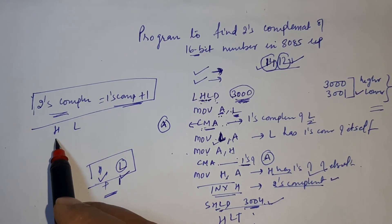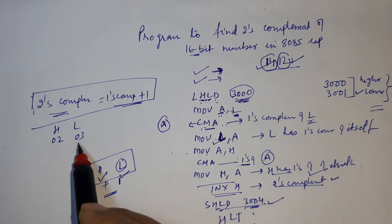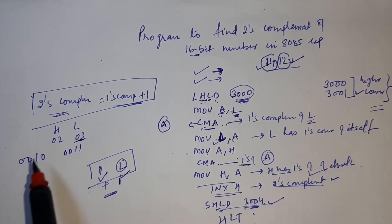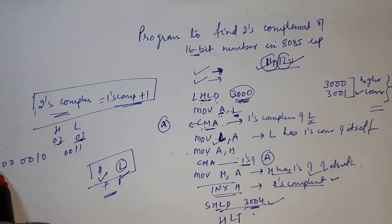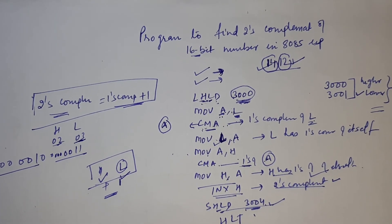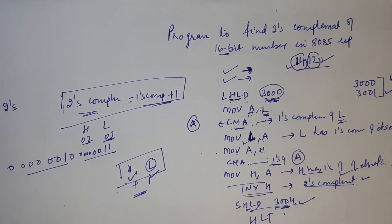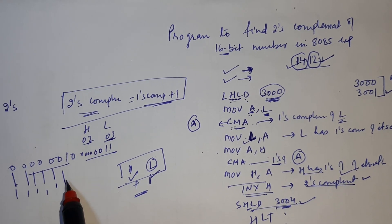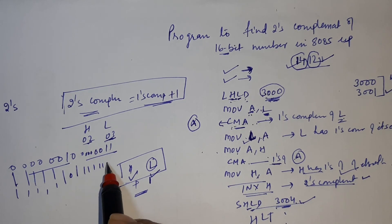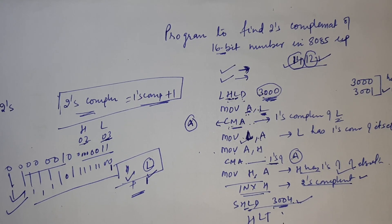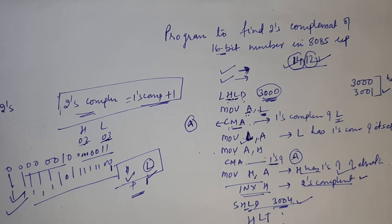For example, suppose the number is 0203H — lower byte 02H and higher byte 03H. In binary: 02H is 00000010 and 03H is 00000011. CMA inverts all bits — zeros become ones and ones become zeros. Then adding 1 gives the final 2's complement of the 16-bit number. This is a simple program to find 2's complement of any 16-bit number in 8085.